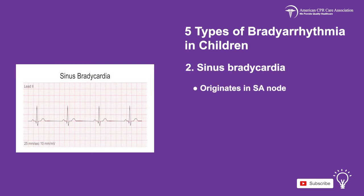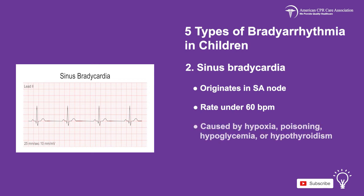The second type is sinus bradycardia, which originates in the SA node with a low rate of fewer than 60 heartbeats per minute. It develops because of decreased metabolic demand and can be caused by hypoxia, poisoning, hypoglycemia, or hypothyroidism.